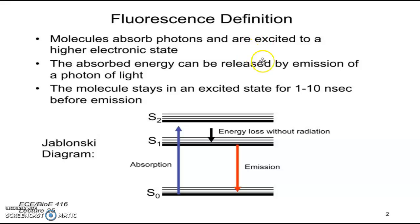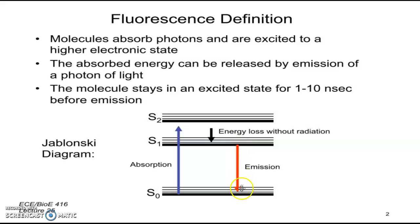In this fluorescence diagram, molecules absorb photons and are excited to higher electronic states like S1 and S2. The absorbed energy can be released by emission of a photon of light. A molecule stays in the excited state for up to 1 to 10 nanoseconds — the least time before emission. In the Jablonski diagram, S0 is the ground state. The purple arrow indicates electron flow by absorption of incident radiation. The energy is lost without radiation, which is called relaxation, and from S1 it comes back to S0 ground state by emission of radiation. This is the fluorescence process.